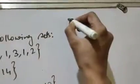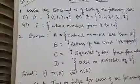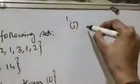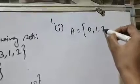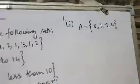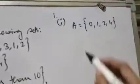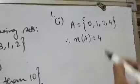Now let's go to the exercise and solve the questions. Question number 1, part 1: write the cardinal number of each of the following sets. First question — set a = {0, 1, 2, 4}. Count the number of elements: 1, 2, 3, 4. Therefore the cardinal number will be 4, so we write n(a) = 4.